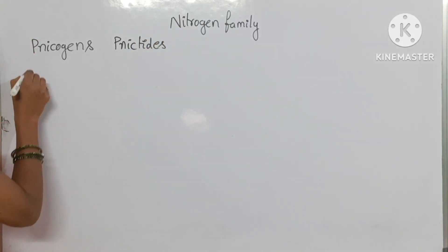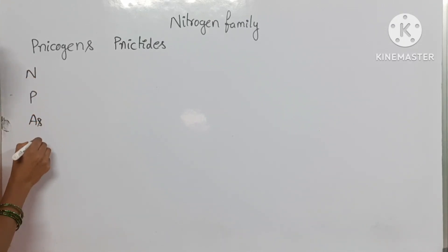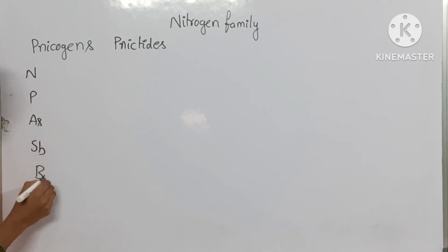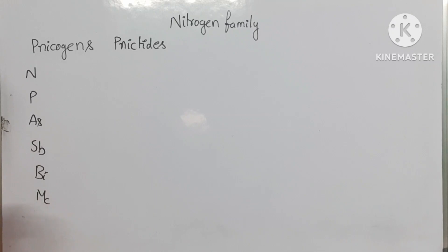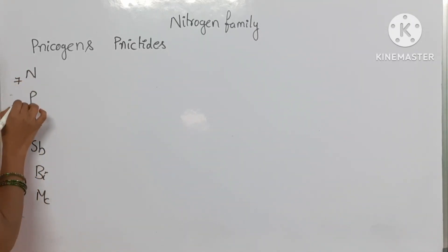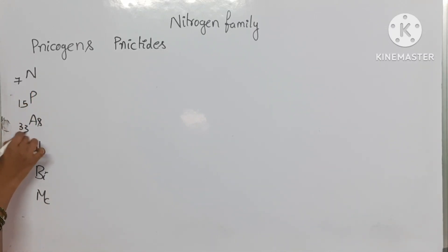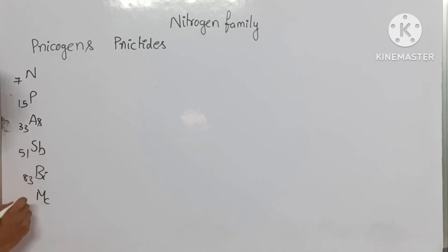These elements are nitrogen, phosphorus, arsenic, antimony, bismuth, and moscovium. These are the 5A group elements. Nitrogen has atomic number 7, phosphorus 15, arsenic 33, antimony 51, bismuth 83, and moscovium is 115.